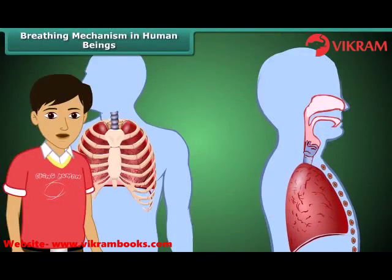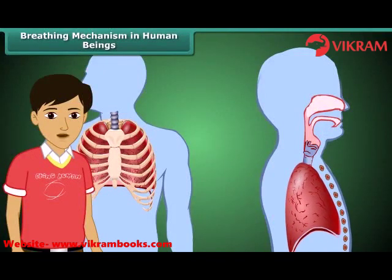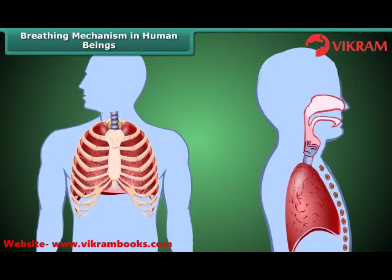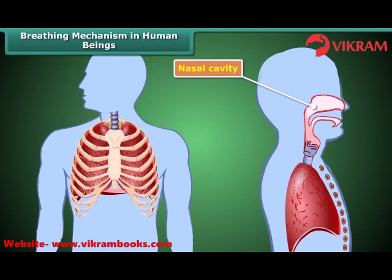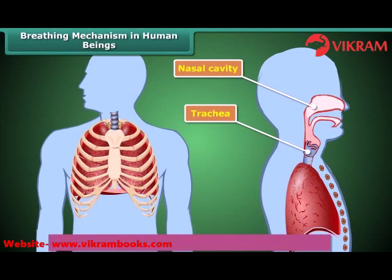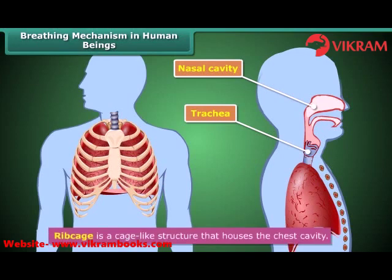Let us now understand how breathing occurs in human beings. First, we inhale air through our nostrils. This inhaled air passes into the nasal cavity, where the air is filtered and heated. From the nasal cavity, the inhaled air passes down the throat and enters the windpipe known as the trachea. From the trachea, it reaches both our lungs which are present in the chest cavity. This cavity is surrounded by ribs on both sides.